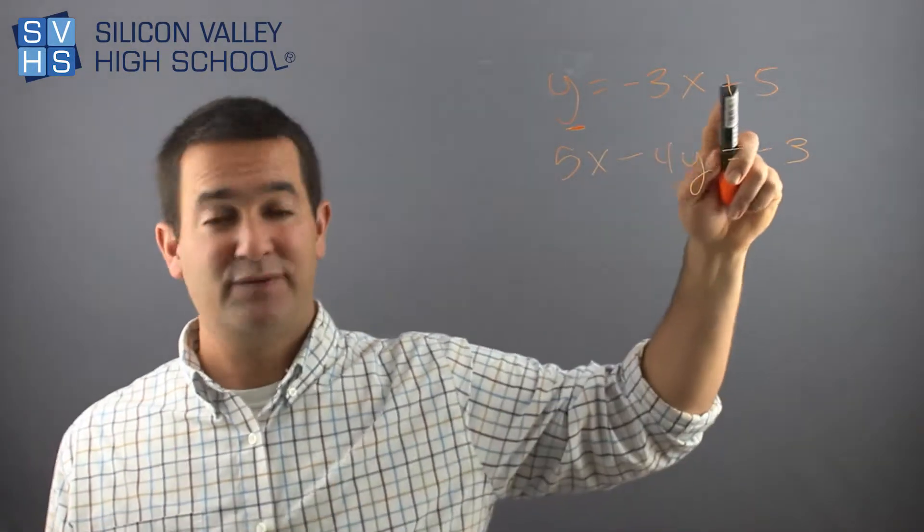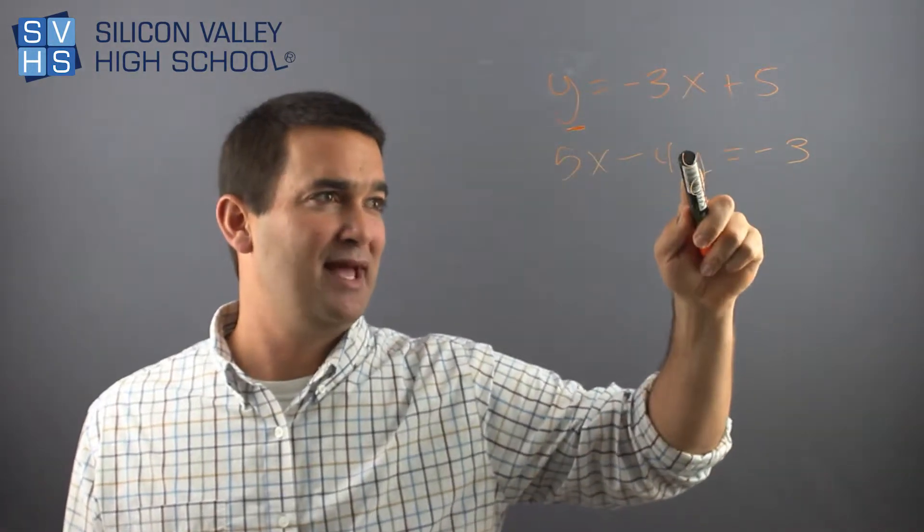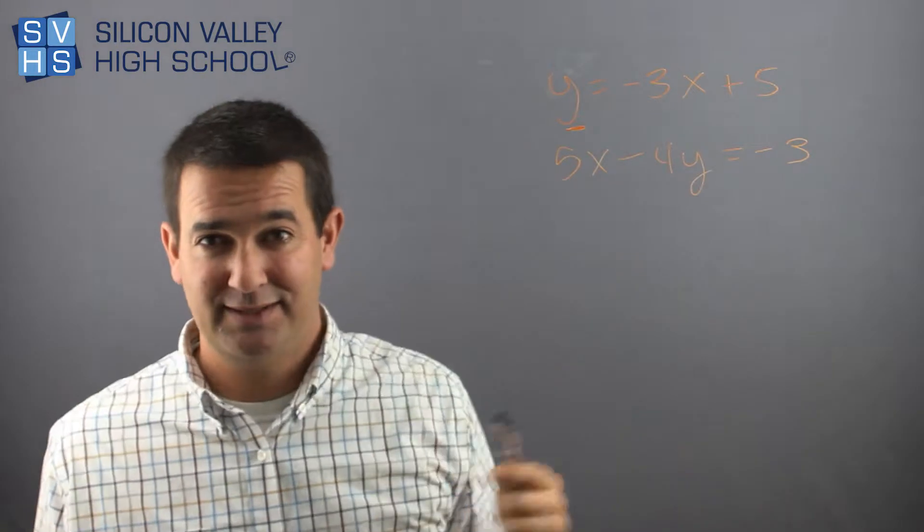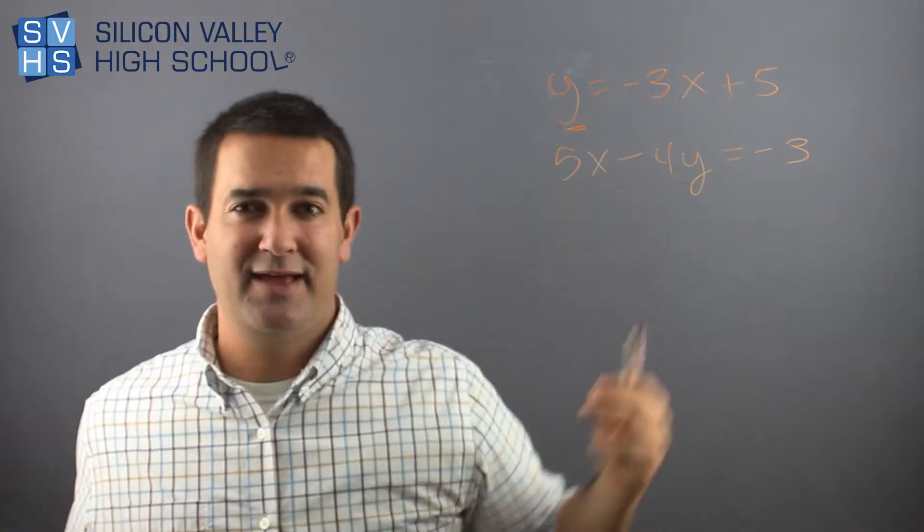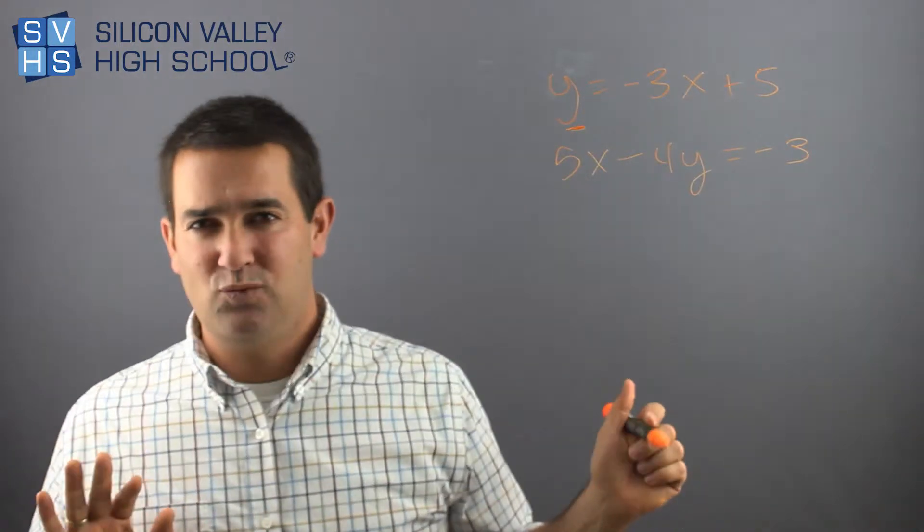If y truly is negative 3x plus 5, which that's what they're telling me it is, then I should be able to blindly put that into that little y. Of course I'll need some parentheses to do it, but I should be able to put it in there and it will come out right. Use any method you want.